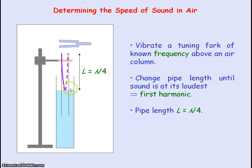The pipe length will equal a quarter of a wavelength, so the wavelength will be 4 times the pipe length. We can use the equation V equals F lambda to determine the speed of sound in air, where F is the frequency of the tuning fork and lambda equals 4 times the pipe length.